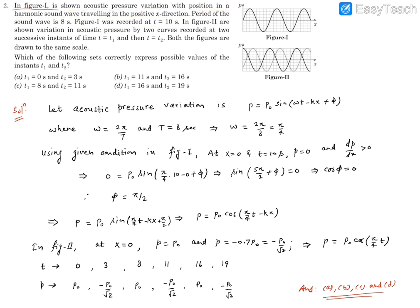So this picture, figure one, is of the instant t equal to 10 seconds. The same wave has been snapshotted at different times t1 and t2, which are being plotted in figure two. Let's say the pressure variation of this sound wave is p equals p naught sine omega t minus kx plus phi. Because we know a wave traveling in positive x direction should be written like omega t minus kx.